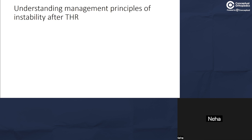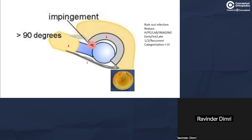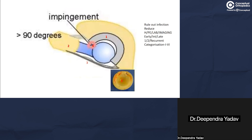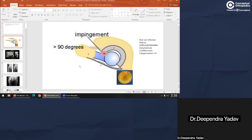Good evening. So you remember the classification we discussed last time. Dependra has just revised the six degrees. Whenever a dislocation occurs, you always have to rule out infection first, which sometimes you can rule out clinically, and quite often in intermediate or late cases you need to rule it out with some blood tests as well.